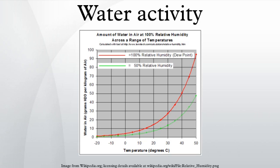Food designers use water activity to formulate shelf-stable food. If a product is kept below a certain water activity, then mould growth is inhibited, resulting in a longer shelf life. Water activity values can also help limit moisture migration within a food product made with different ingredients. If raisins of a higher water activity are packaged with bran flakes of a lower water activity, the water from the raisins migrates to the bran flakes over time, making the raisins hard and the bran flakes soggy.